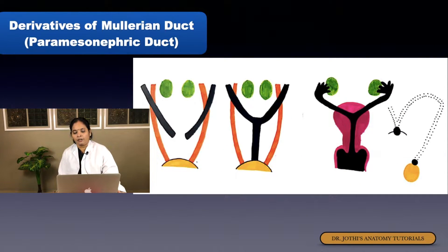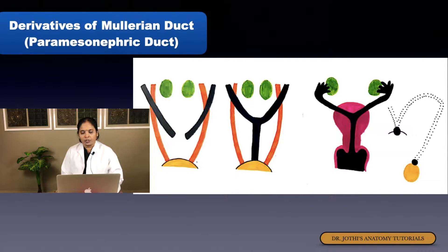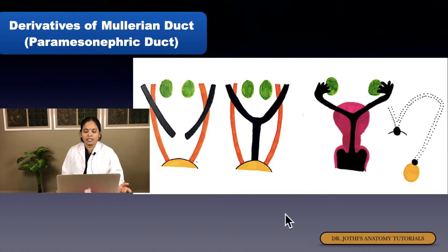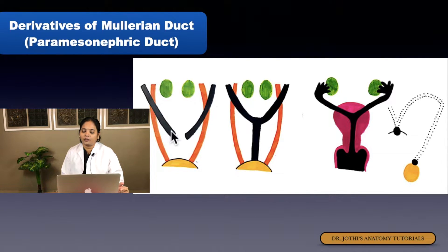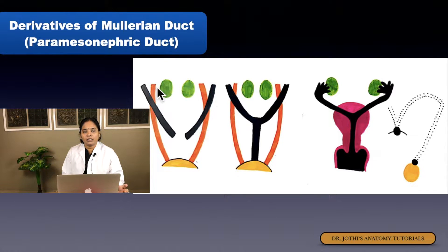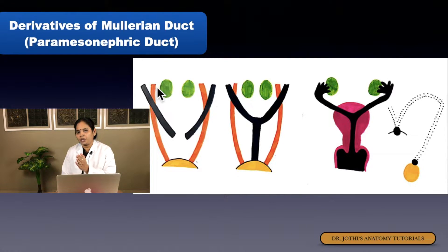In the development of the reproductive system, the mesonephric ridge on the medial side forms the genital ridge, and on the lateral side a duct forms — the genital duct or paramesonephric duct. The mesonephric duct is responsible for the formation of the ductule system of the testis, the canal of epididymis, and the vas deferens in male features. Another name for it is the Wolffian duct.